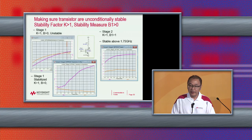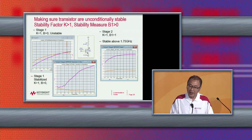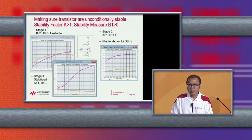Let's start with the transistors — we need to ensure they are unconditionally stable. Looking at stage one on the left, we check that the stability factor is greater than one and the stability measure is greater than zero. For stage one, the stability factor is not more than one, so we need to stabilize it. A simple approach is to add a small resistor to the collector of the stage one transistor. Stage two is already stable above 1.75 GHz, so since we're matching centered at 2.5 GHz over a one gigahertz bandwidth, stage two is ready to be matched.